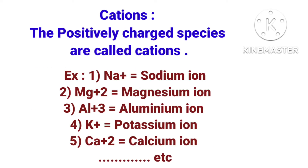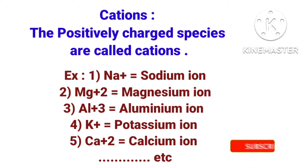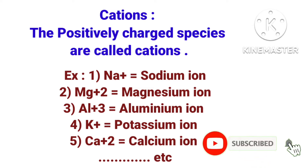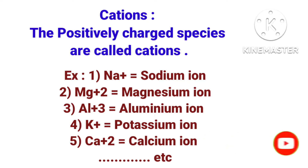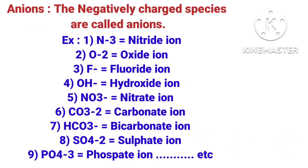Those two types are cations and anions. A cation means the positively charged species. Examples are sodium ion, magnesium ion, aluminium ion, potassium ion, calcium ion, and so on. An anion means the negatively charged species. Examples are nitride ion, oxide ion, fluoride ion, hydroxide ion, nitrate ion, carbonate ion, bicarbonate ion, sulfate ion, and phosphate ion. Their formulas you have to remember carefully.